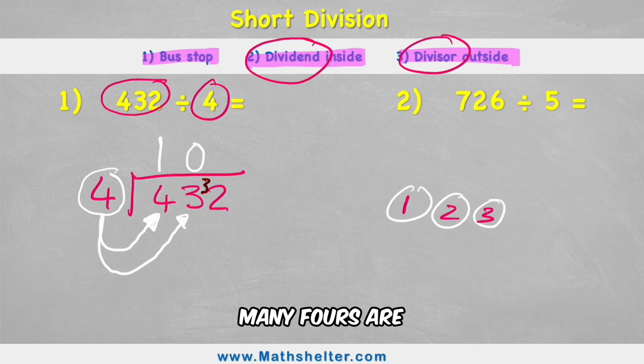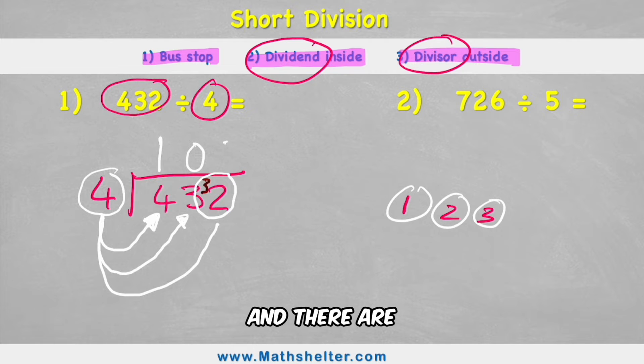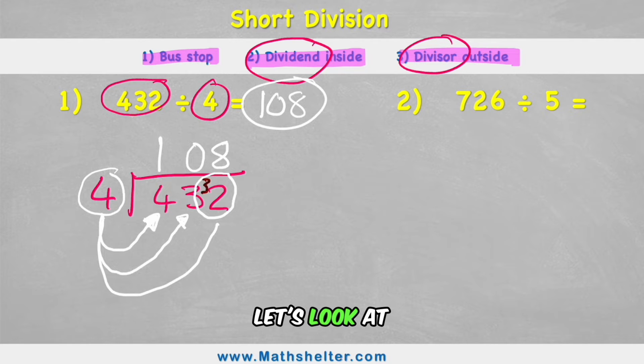And now when I look at how many fours are there in 2, it actually says how many fours are there in 32. And there are eight fours in 32. So the answer to 432 divided by 4 is 108. Let's go. Let's look at question two.